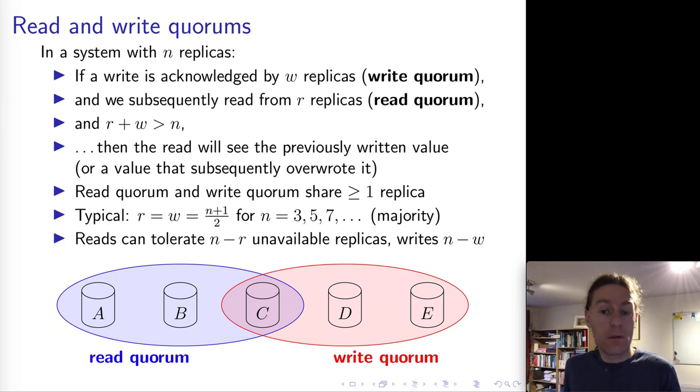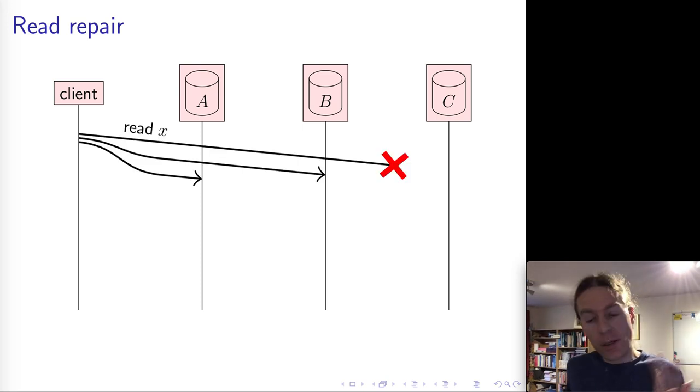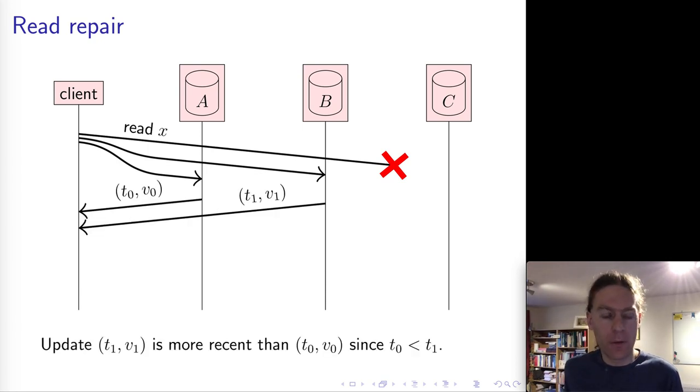So this is what quorums are about, really. Now that we've done these quorum reads and writes, one thing that we can do is the client can help get those different replicas back in sync with each other again. So in this case here, the client received an outdated value from A, and it received the up-to-date value from B, and it didn't receive anything at all from C. And so the client already knows now that A and B and C are inconsistent with each other.